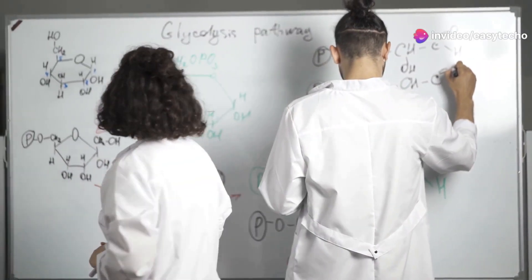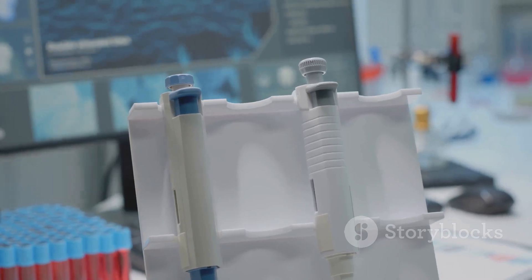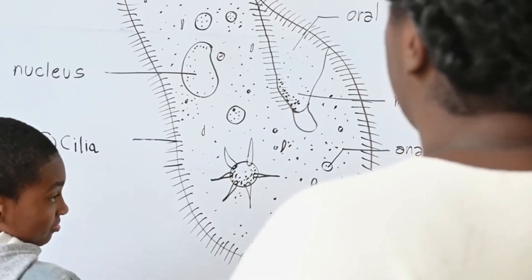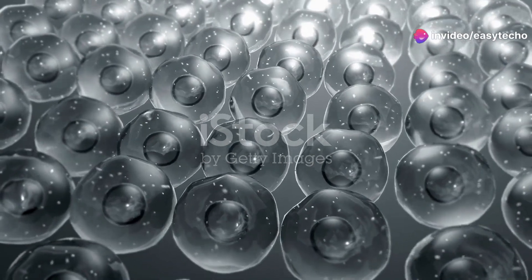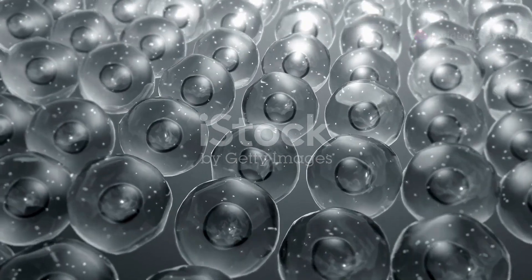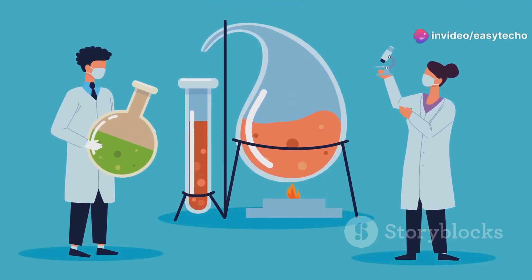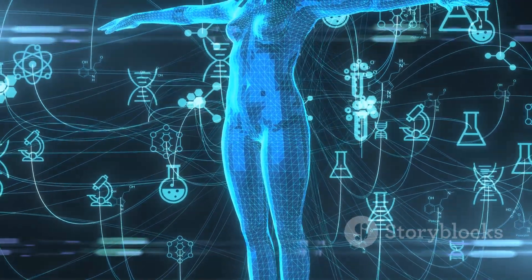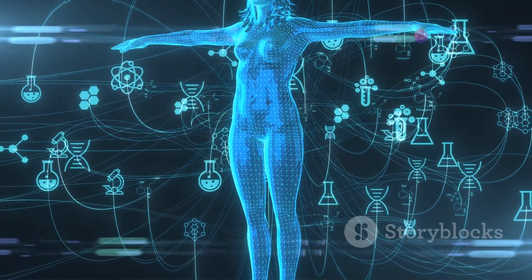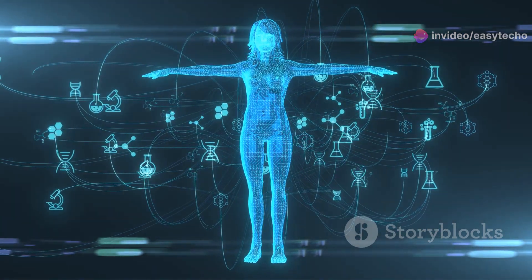Another crucial characteristic is metabolism, which encompasses all the chemical reactions that occur within an organism to maintain life. Living organisms require energy to maintain their organization and carry out life processes. This energy is derived from various sources, such as sunlight for plants and food for animals. Metabolism involves a complex network of chemical reactions that break down nutrients to release energy and build complex molecules essential for life. For instance, during digestion, food is broken down into simpler molecules that can be used by cells.